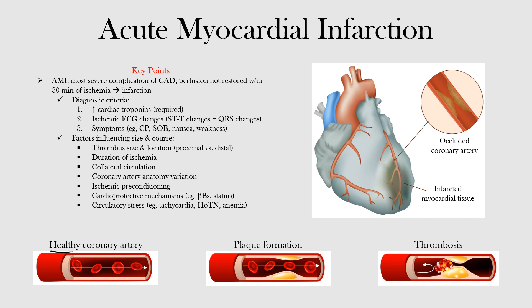To recap visually: here is a healthy normal coronary artery. With poor diet, smoking, and other risk factors, plaque deposition occurs within the arterial lumen, causing the lumen to narrow and reducing blood flow. With the accumulation of lipids and inflammation, a break in the endothelial lining can occur, activating thrombogenic factors and forming a thrombus that can block or partially occlude the artery.